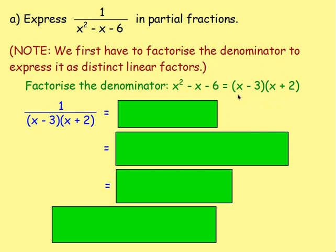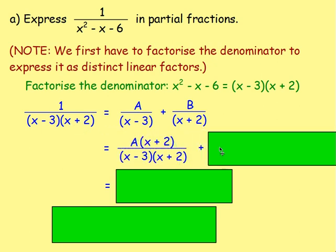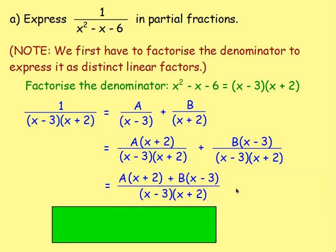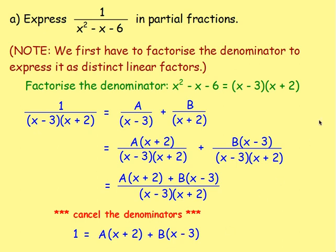Because we have distinct linear factors, we write the partial fractions as A/(x − 3) + B/(x + 2). To add these fractions we need the same denominator: A is over (x − 3) so multiply by (x + 2); B is over (x + 2) so multiply by (x − 3). Adding numerators and equating: 1 = A(x + 2) + B(x − 3).